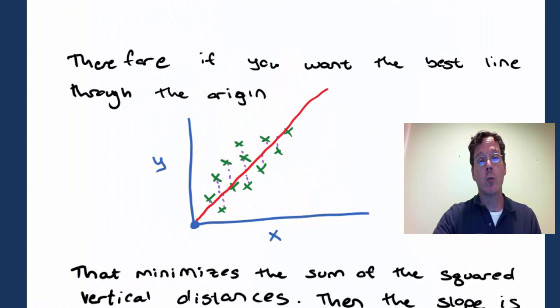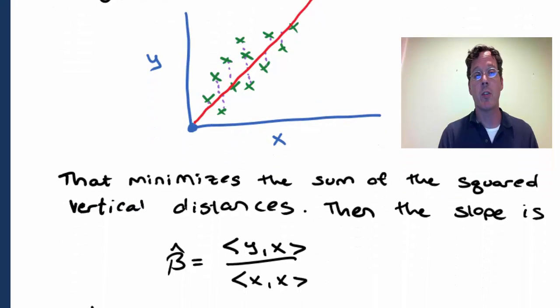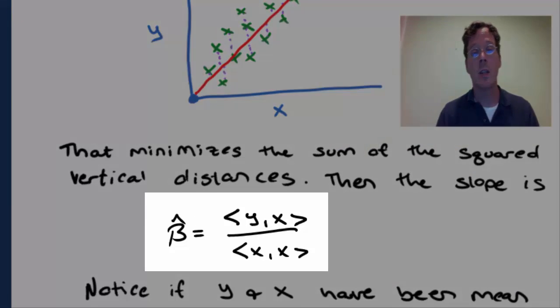Just to remind ourselves what we're accomplishing, we're taking a line through the origin and using the origin as a pivot point and moving that line around. For the collection of points in the scatter plot, we're calculating the vertical distance between those points and the line, and we're finding the line that minimizes the sum of the squares of these vertical distances. That slope of that line is the inner product of y and x divided by the inner product of x with itself.